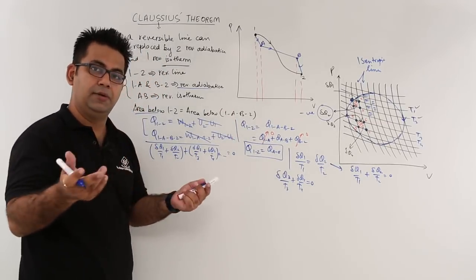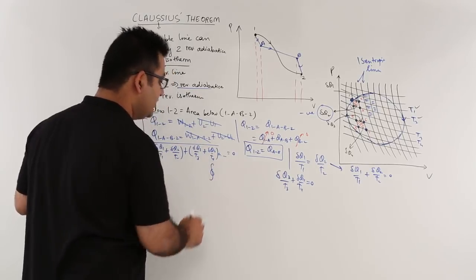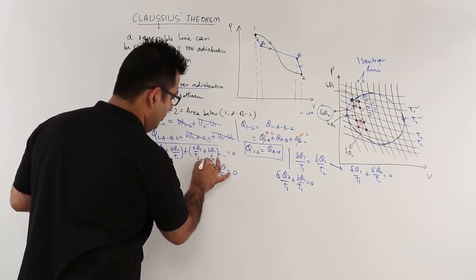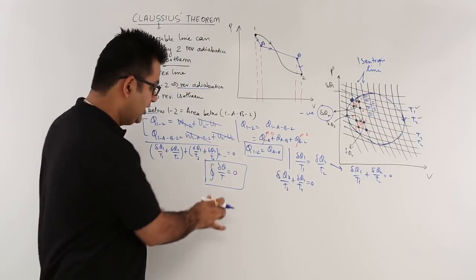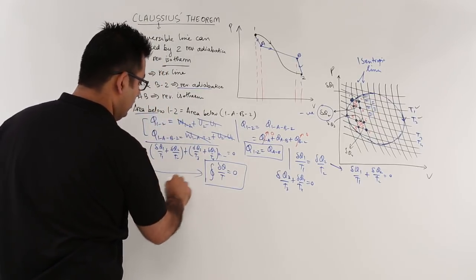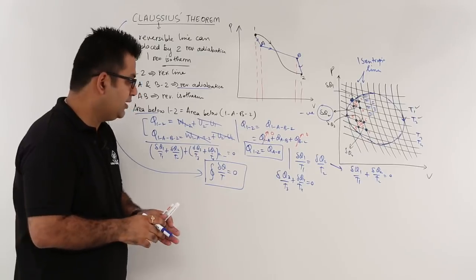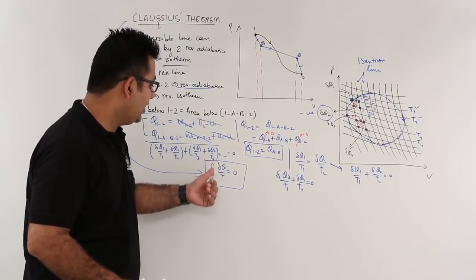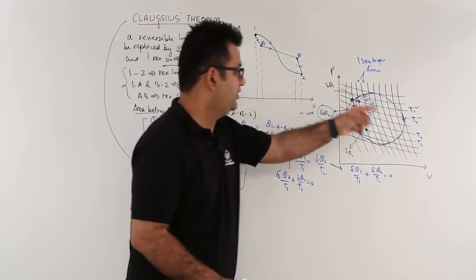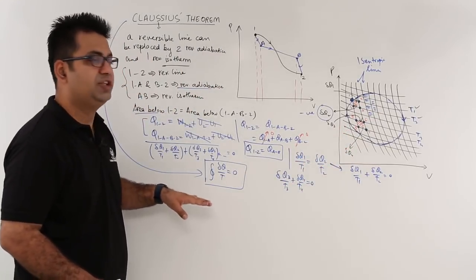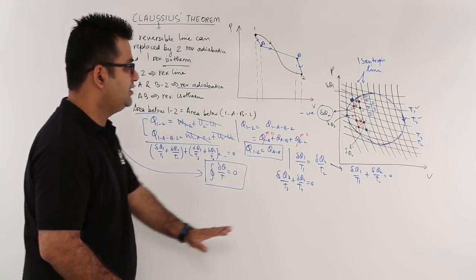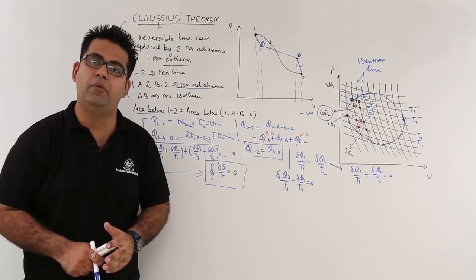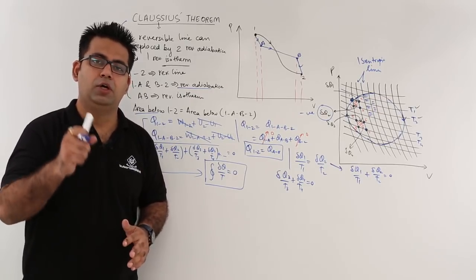Summing over all elementary Carnot cycles and generalizing, we get the cyclic integral of δQ/T = 0. This is the mathematical statement of the Clausius theorem: the cyclic integral of δQ/T equals zero for any reversible cycle. In the next video, we will take this discussion forward and talk about the Clausius inequality.